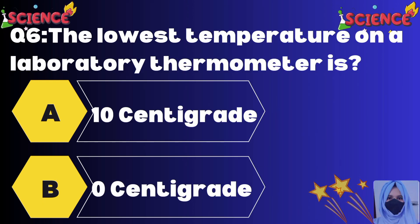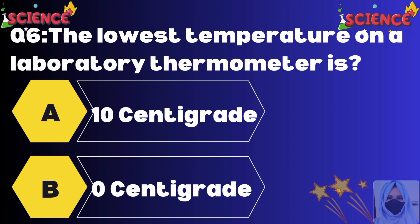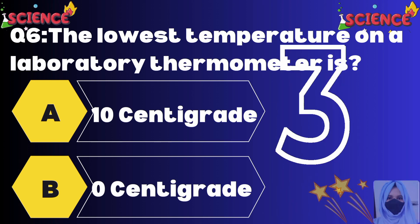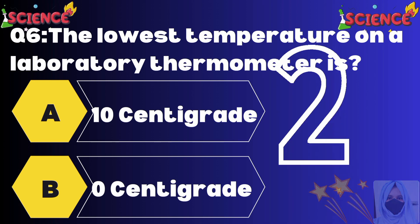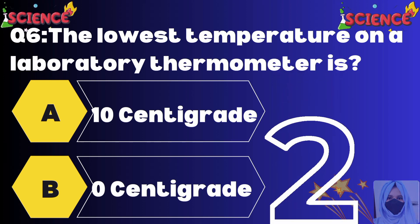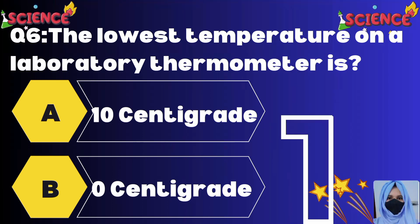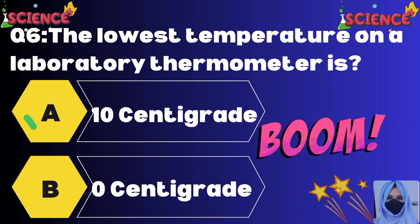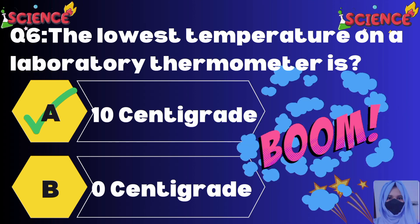The lowest temperature on a laboratory thermometer is: option A 10 centigrade, option B 0 centigrade. The correct answer is option A, 10 centigrade.